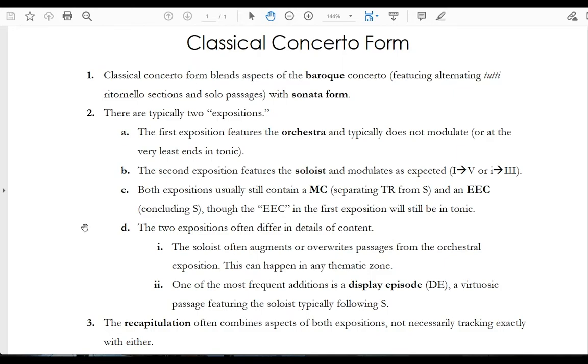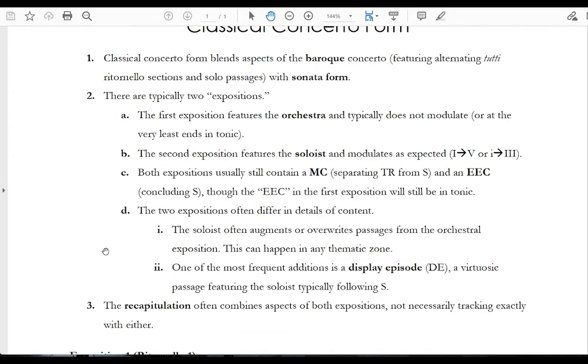Sometimes the expositions will differ in details of the content. So for instance, the soloist will often augment or overwrite passages from the orchestral exposition. What I mean by that is the soloist could start with a slightly different primary theme and then tack on the one that the orchestra had introduced, or the soloist could start with the original material from the transition from Expo 1, but then add additional transitional material that's unique to Expo 2. Any sort of addition or truncation or substitution can happen in any thematic zone, so either in P, TR, S, or C, or some combination thereof.